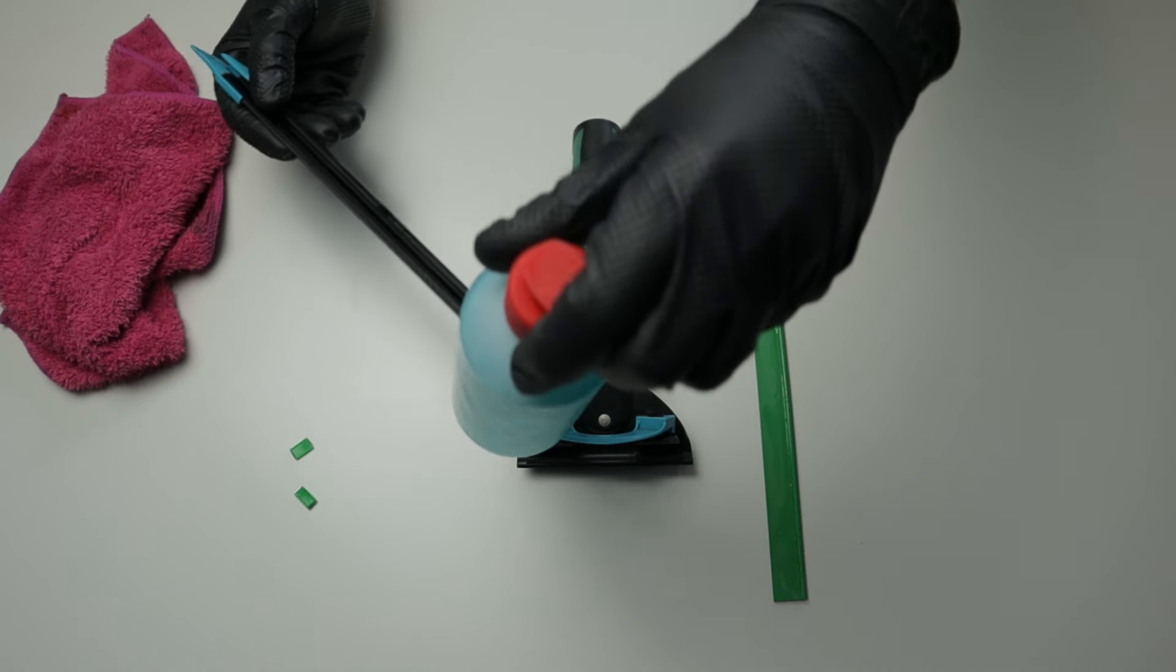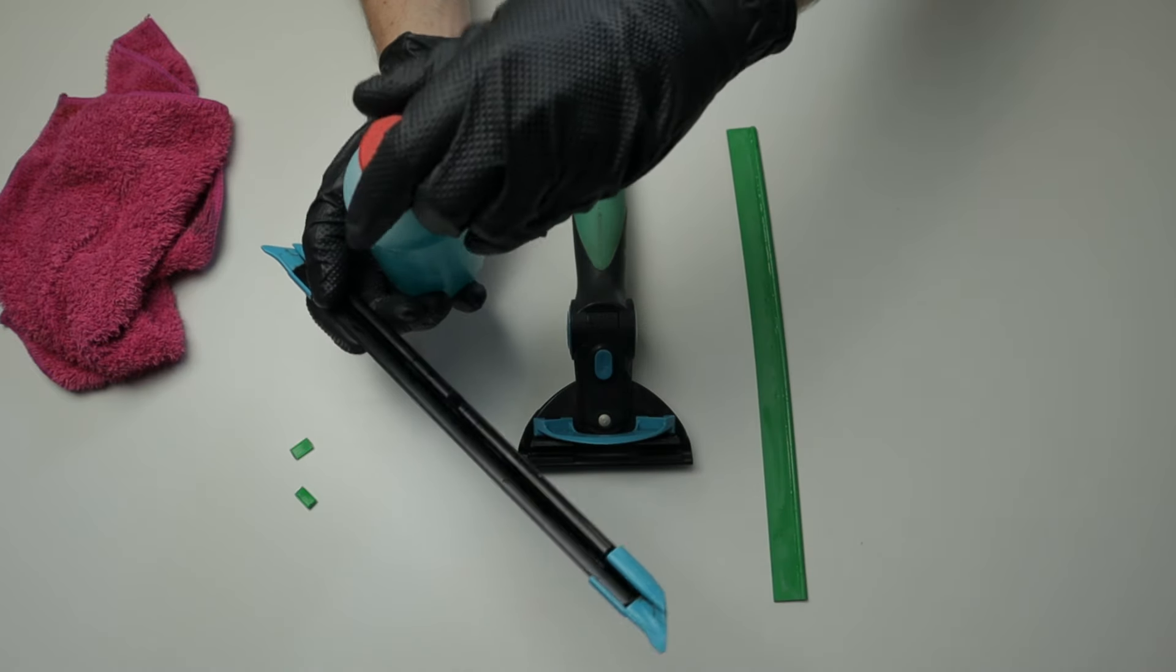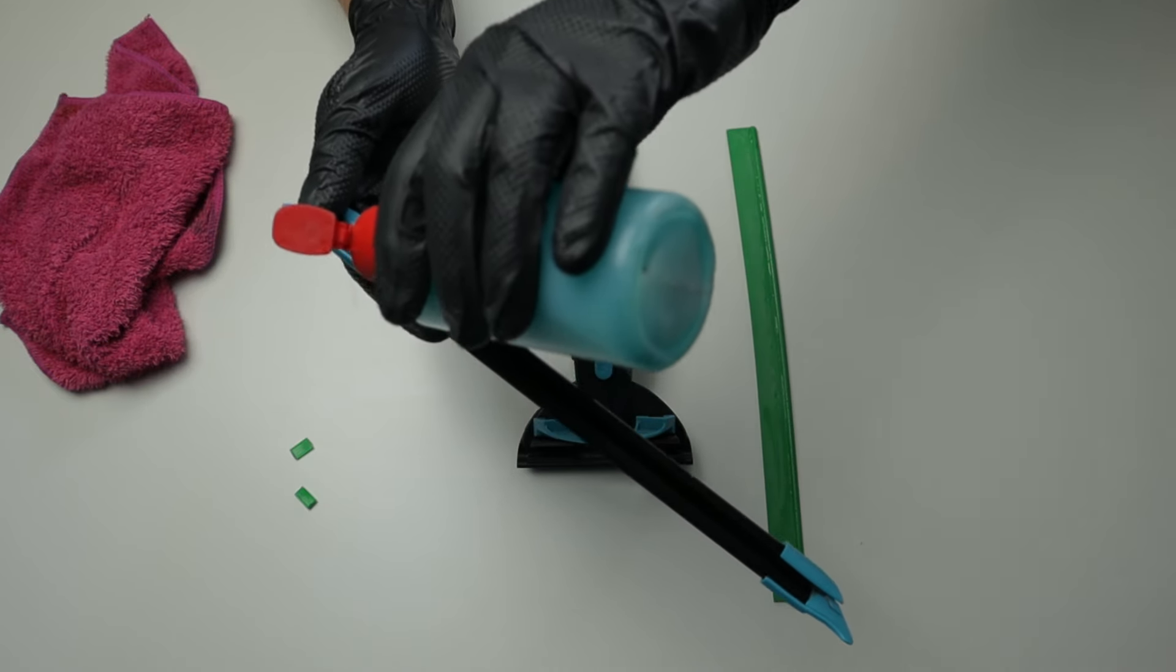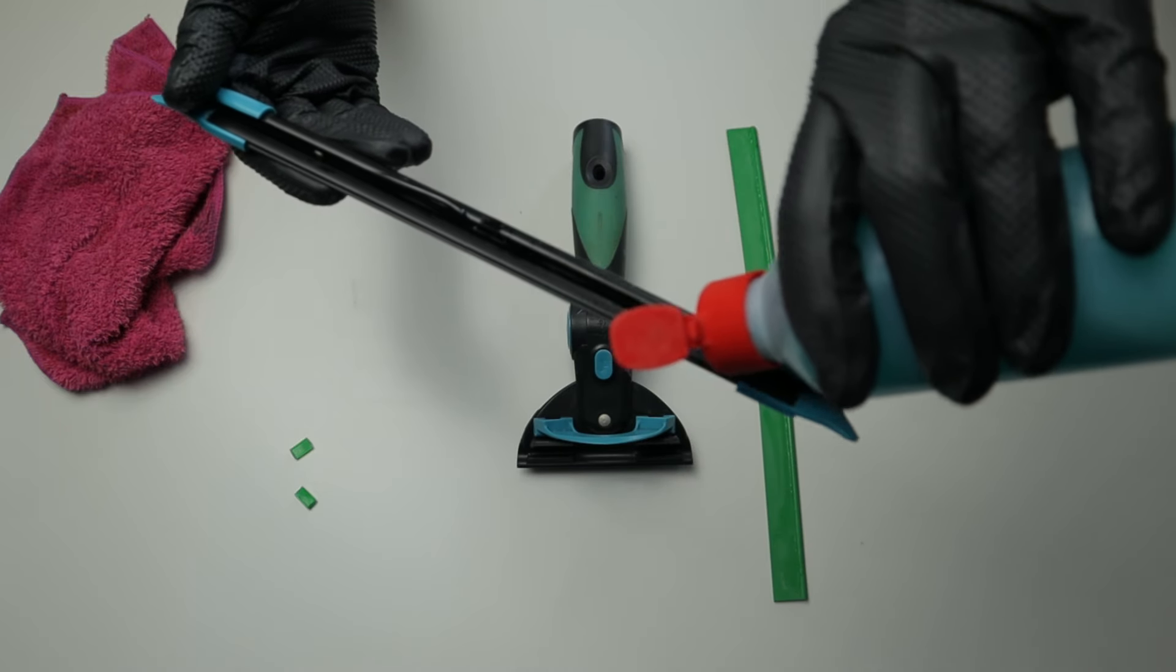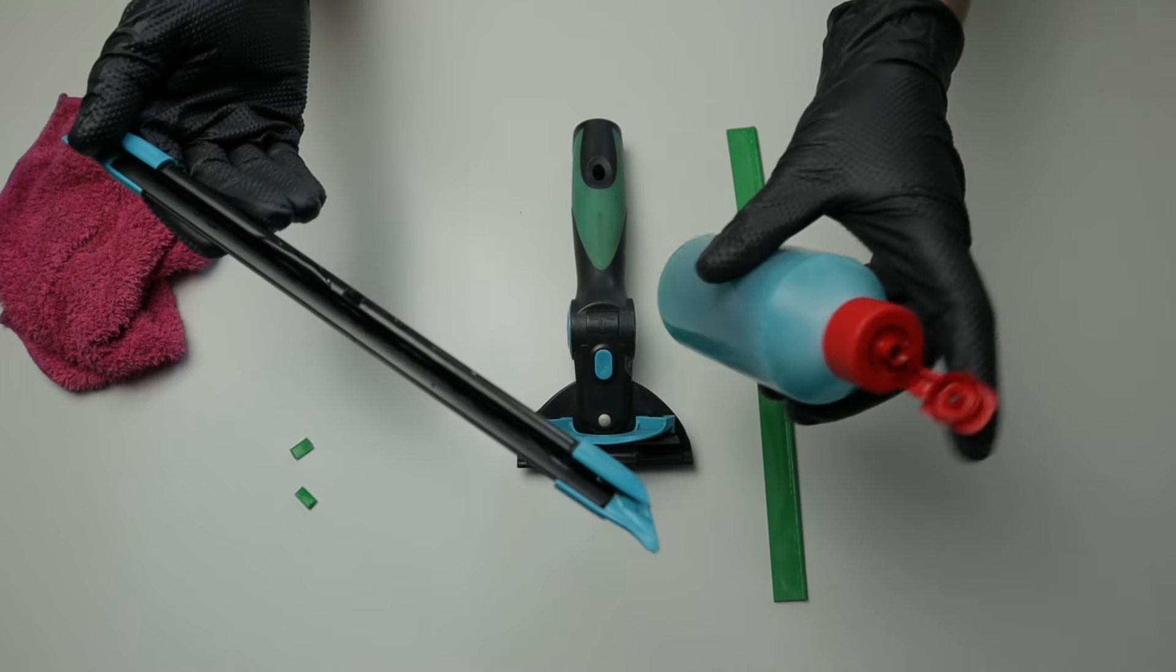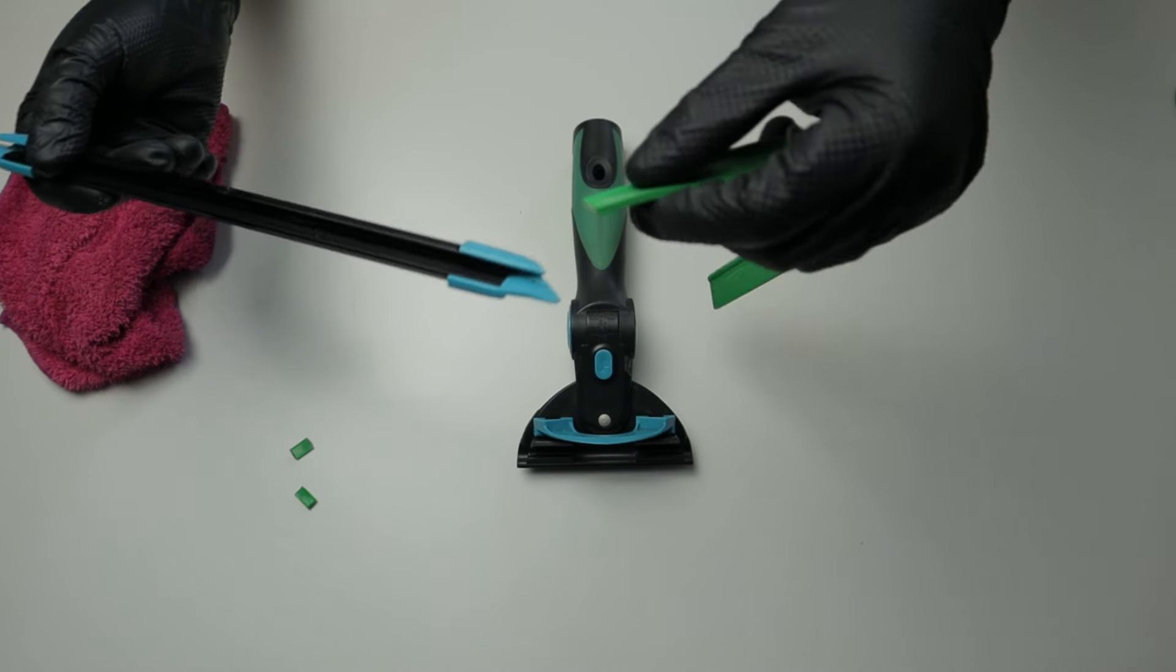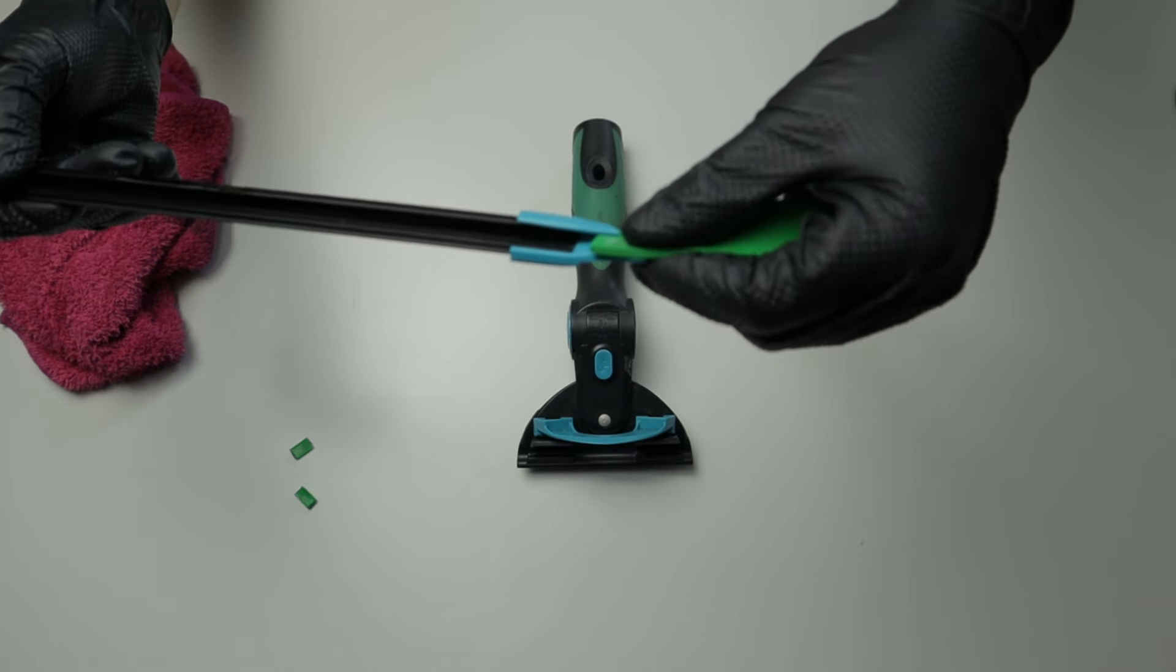Simply again, putting a little bit of solution, a bit of detergent in there like so, put that aside. Taking our squeegee rubber, inserting that into the channel.